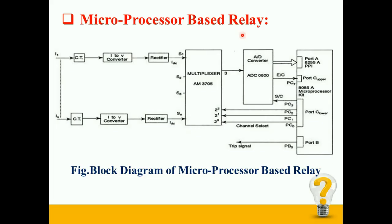The schematic diagram of microprocessor based relay is shown in the figure. The CT receives the current input. This current is converted into proportional AC voltage using I2V converter. This AC voltage is converted into DC voltage using rectifier. The output of rectifier is fed to the multiplexer. The output of multiplexer is provided to analog to digital converter to obtain the signal in digital form. ADC 0800 is used for this purpose.